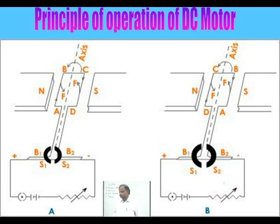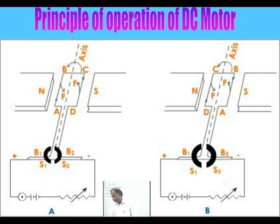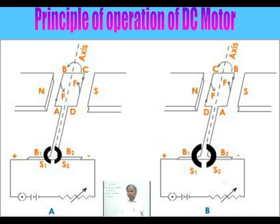The operation is clear: when current flows through the coil from A to B, B to C, C to D in this direction, the current flow is perpendicular to the magnetic field. The magnetic field goes from north to south. Since the current is perpendicular to the magnetic field, these two perpendicular quantities cause a force to be set up perpendicular to the direction of both — given by the right-hand or Fleming's rule.